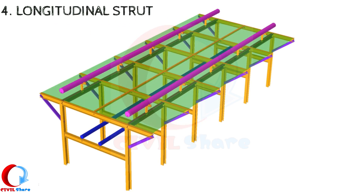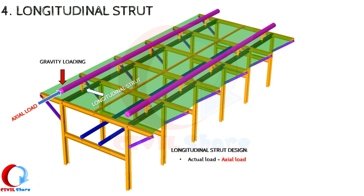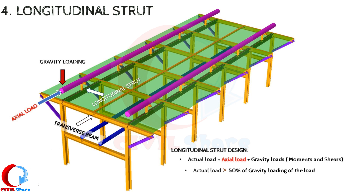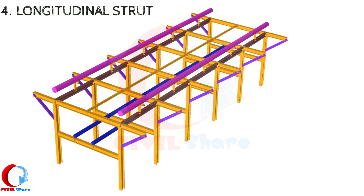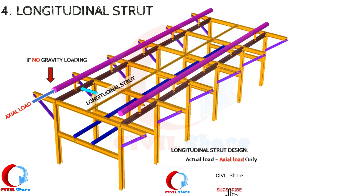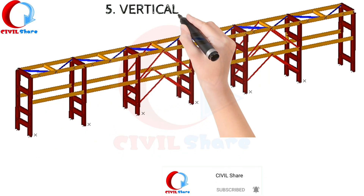Longitudinal struts: In areas where gravity loading of struts is anticipated, struts shall be designed for axial loads produced by longitudinal pipe loads plus gravity load moments and shears. Such struts should be designed for the actual load but not less than 50% of the gravity loading of the loaded transverse pipe support beam. Where gravity loading of struts is not anticipated, struts shall be designed for axial load only. The primary source of axial load is longitudinal pipe loads.